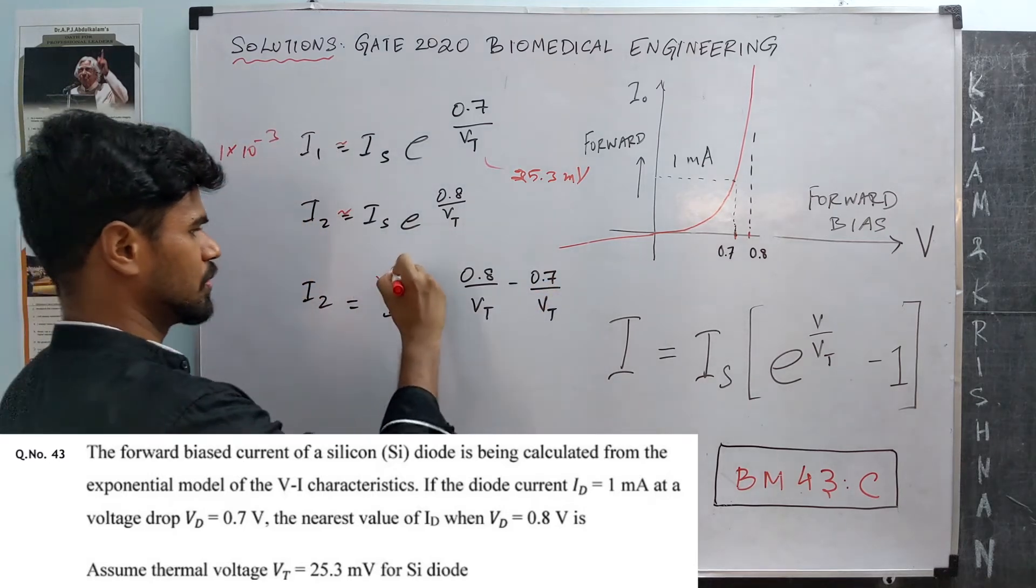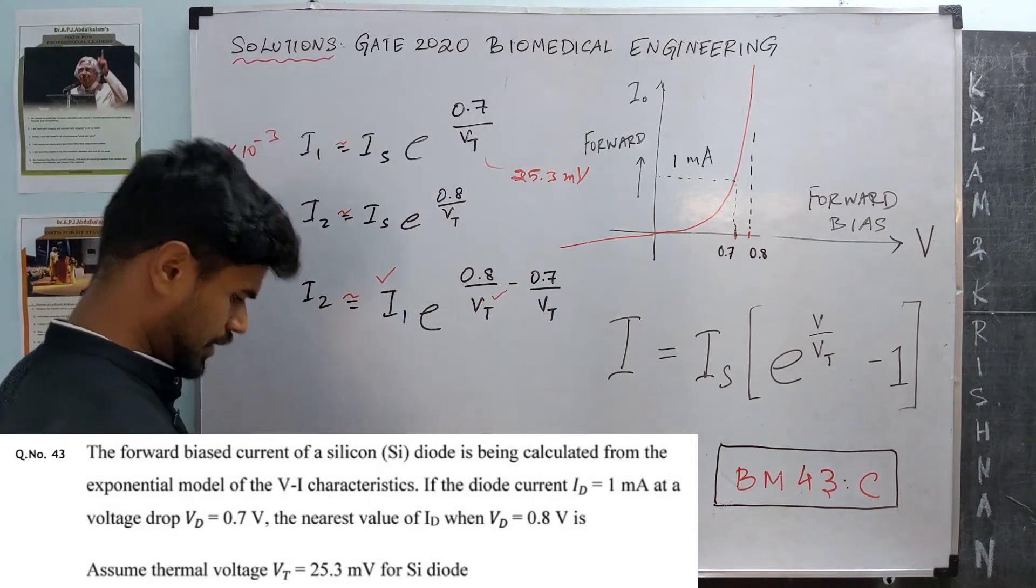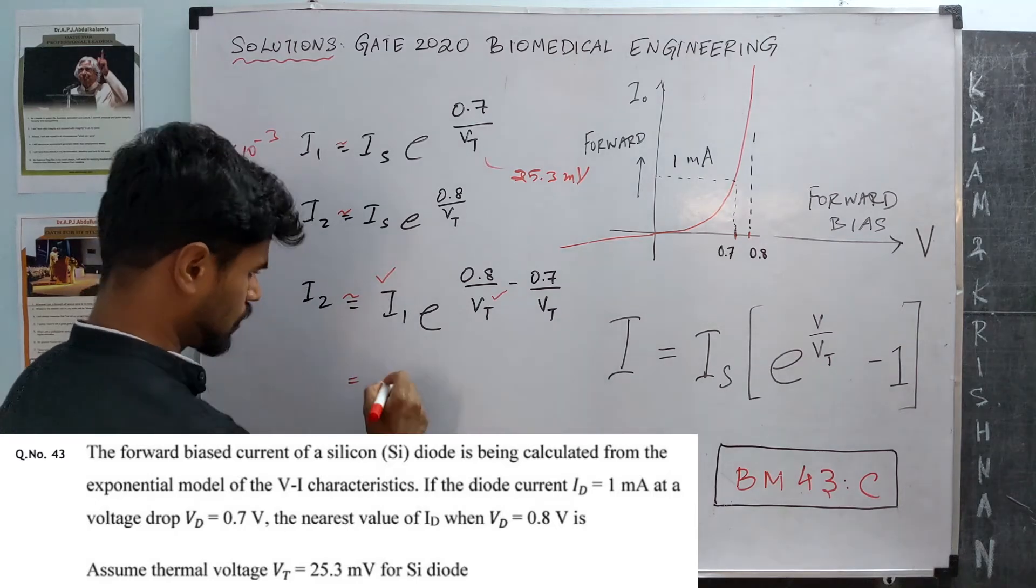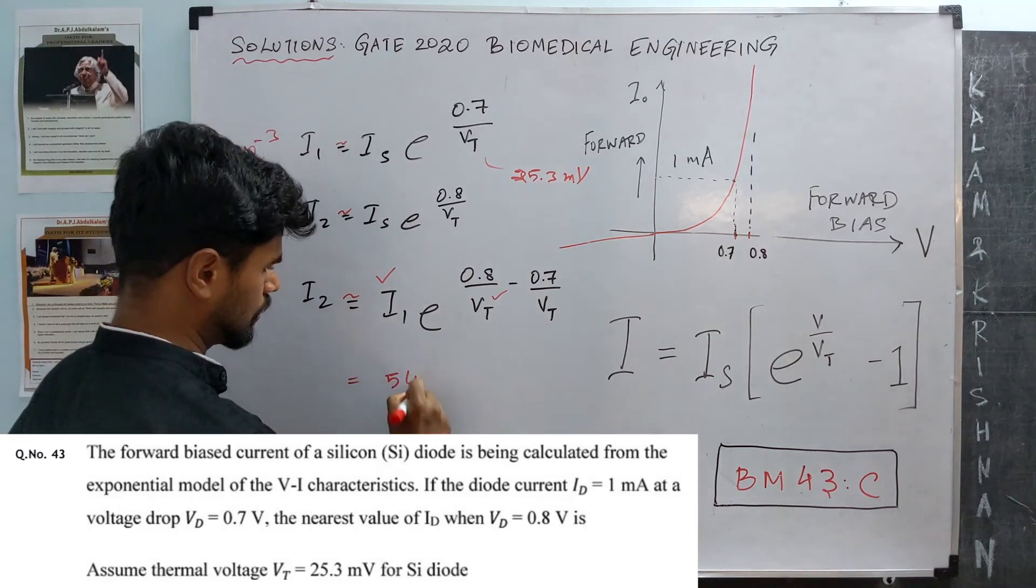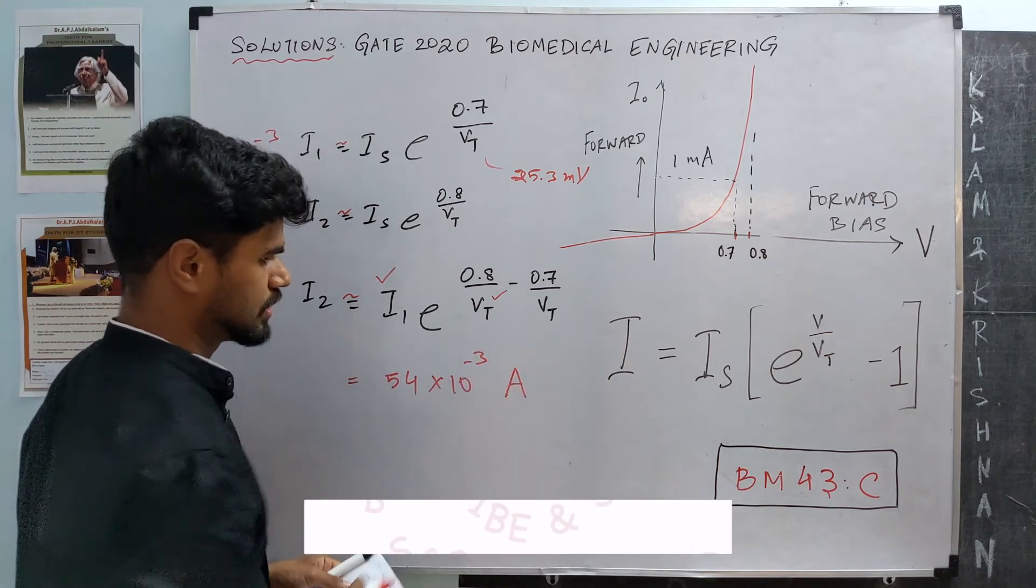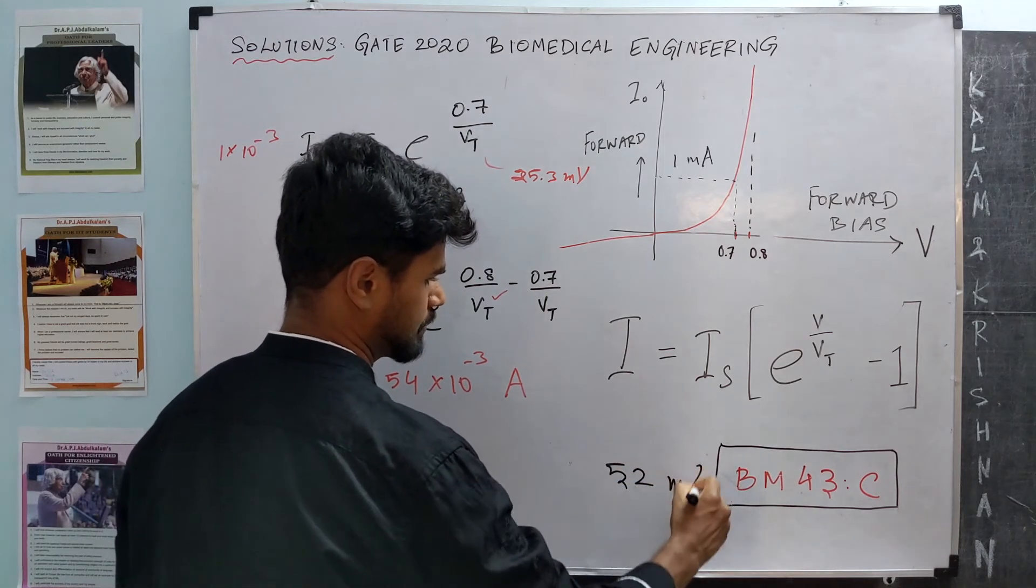Now this is known, VT is known, just plug in the values and find I2. That turns out to be 54 into 10 power minus 3 amps, that is closest to option C which is 52 milliamps.